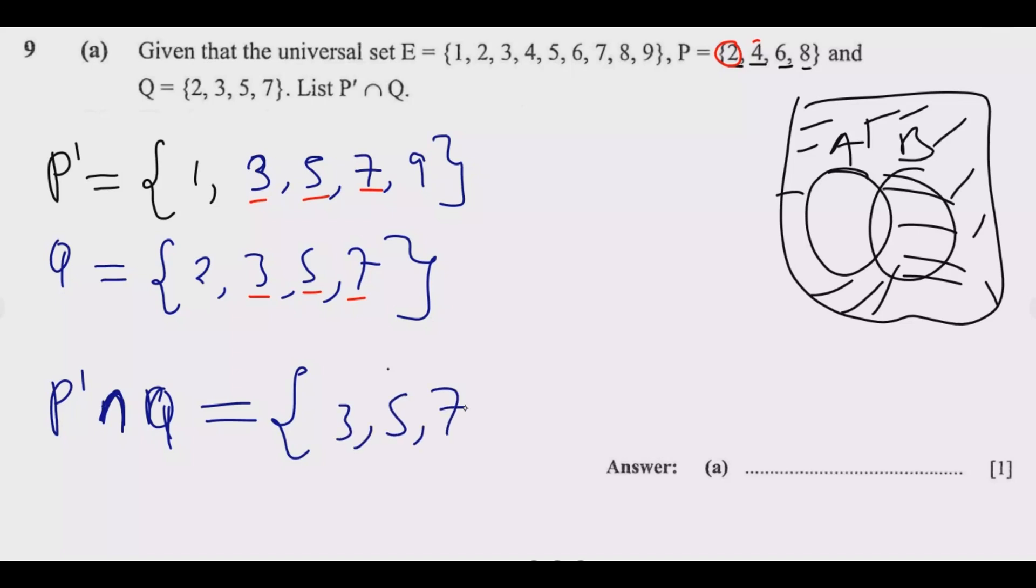So we have {1, 3, 5, 7}. So this is the answer. Don't forget the set symbols. Once you do this, you are good to go. You get that one mark.